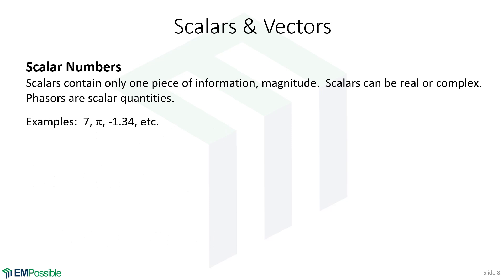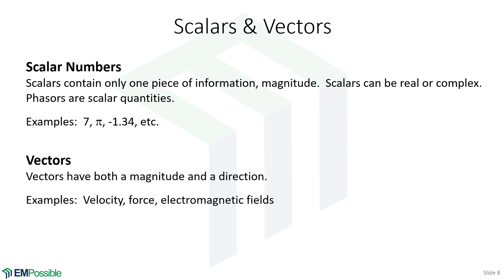On to scalars and vectors. Scalar numbers are just a single number — a single piece of information, sometimes called magnitude or amplitude. Scalars can be real or complex numbers, and phasors are interpreted as scalar quantities. Vectors, on the other hand, are like two pieces of information at the same time: they have a magnitude, but also a direction. For example, if you're driving down the highway, you have a speed and also a direction — maybe 100 kilometers per hour traveling north. In electromagnetics, our fields will have a strength or magnitude, and they'll also be pointing in a direction, which is true for both electric and magnetic fields.